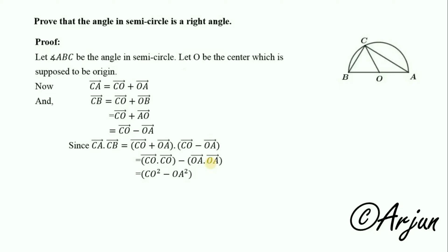Now CO is the radius of the circle - the distance from origin to the circumference is the radius. And OA is also the radius, the distance from the center to the circumference. This is r squared minus r squared.